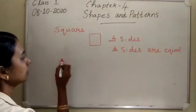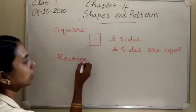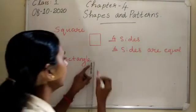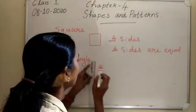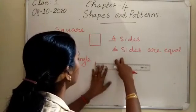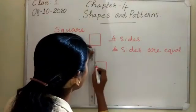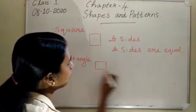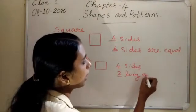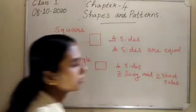Next one is a rectangle. I am taking 4 centimeters and 6 centimeters for the sides. A rectangle has four sides - two long sides and two short sides.